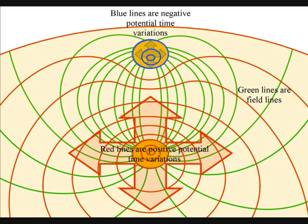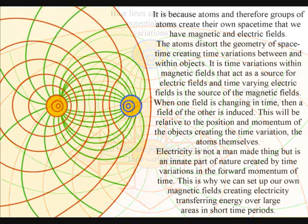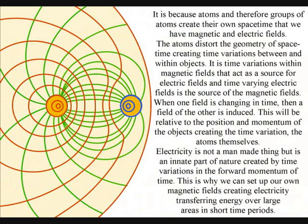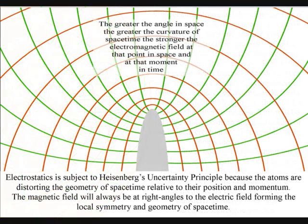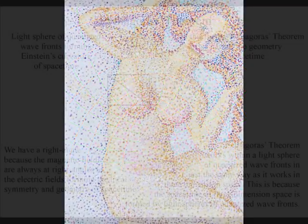It is time variations within magnetic fields that act as a source for electric fields, and time varying electric fields is the source of the magnetic fields. When one field is changing in time, then a field of the other is induced. This will be relative to the position and momentum of the objects creating the time variation, the atoms themselves.